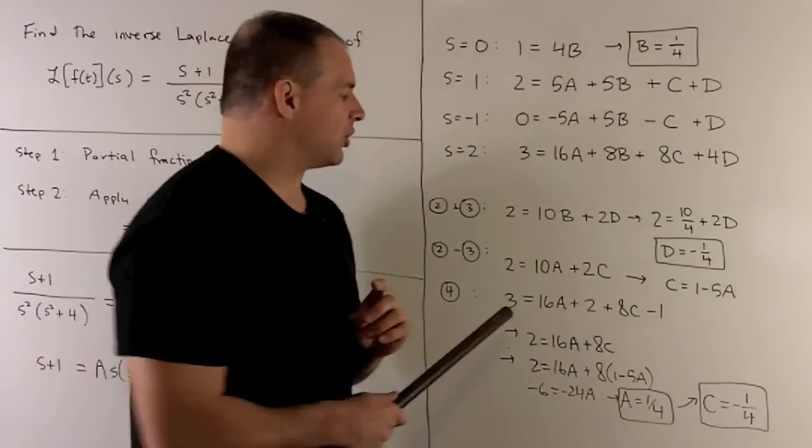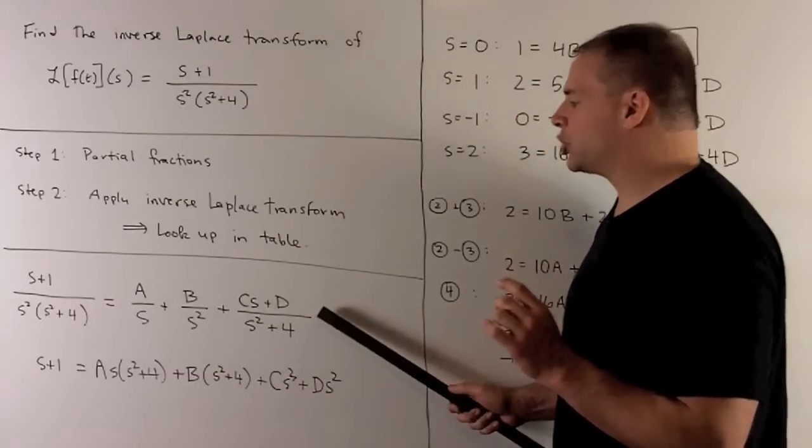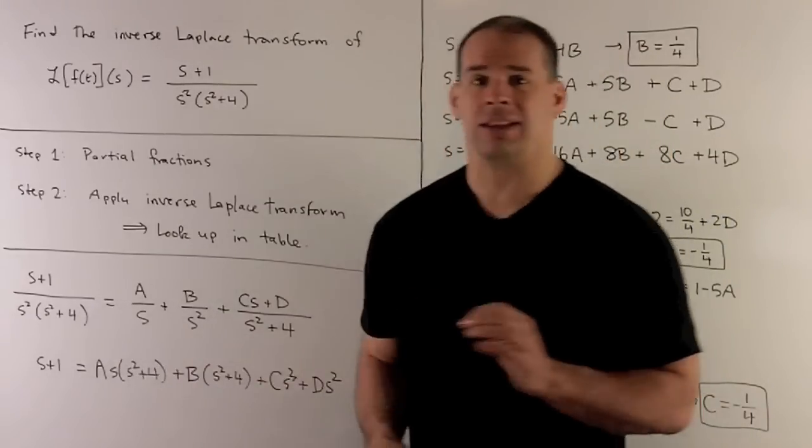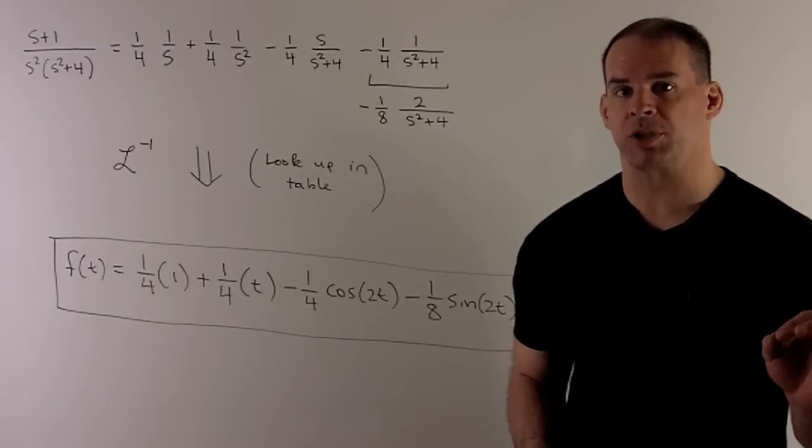And then, you can also take your answers, put them into your partial fraction expansion, and then make sure when you put everything over a common denominator, you get back the thing on the left-hand side. We load our coefficients into our partial fraction expansion.